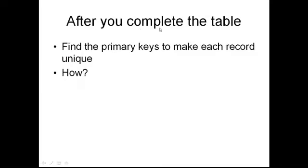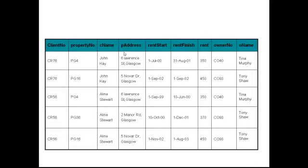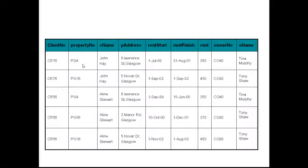After we complete the table, we need to find the primary keys to make each record unique — each row or each record unique. The primary keys are the keys that make each row unique. So how do we make this row unique? Well, client number and property number seem to be the suitable primary keys.